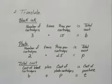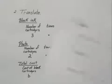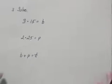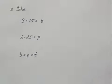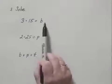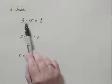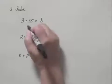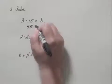So we now have three equations to solve in our solve step. Now fortunately, none of them will take a long time to solve. For the first one, 3 times 15 equals B. We simply need to multiply 3 times 15, and we get 45 equals B.